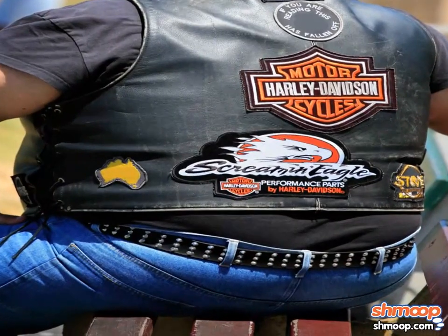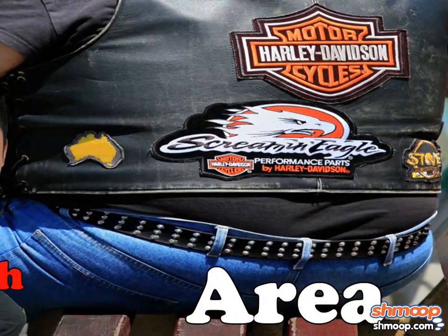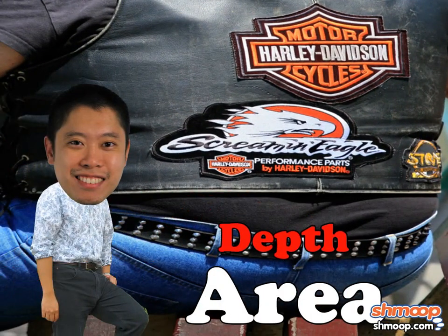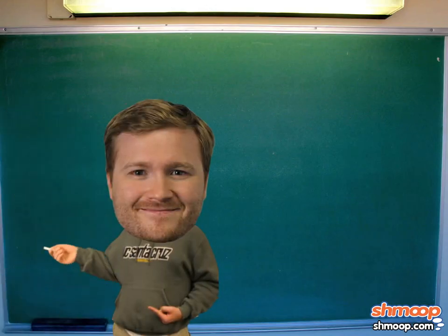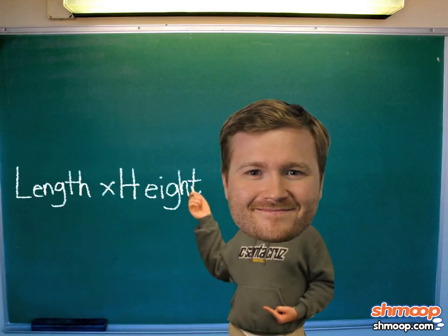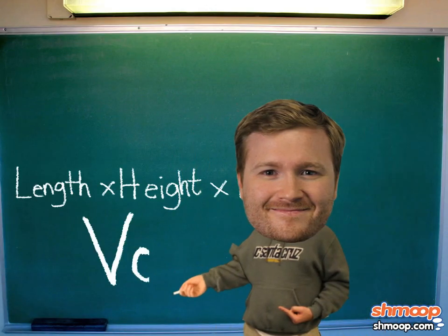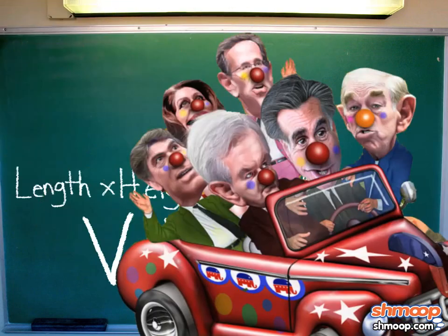We assume you've already got area under your belt. Now it's time to add some depth to the mix. We can multiply length times height times depth to find an object's volume, which allows us to determine its capacity.